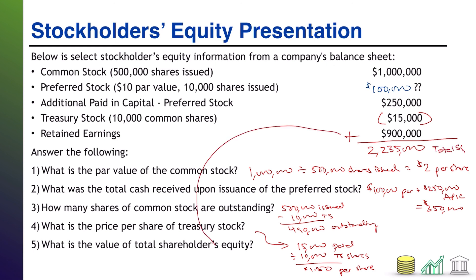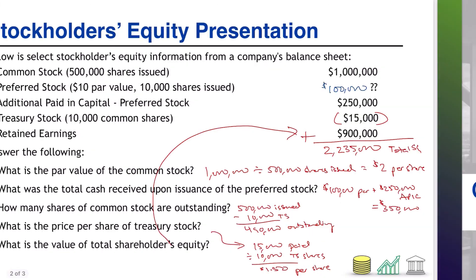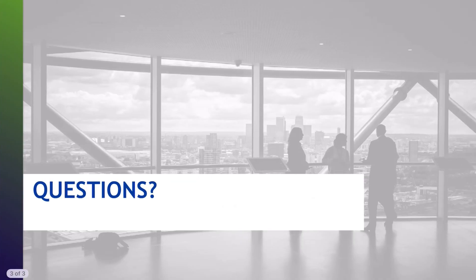And that was our answer to the final question. I hope this helped you see how all the pieces of shareholders' equity are related and how you can solve for missing items should you not have that information. I hope you found it helpful, and I hope you join me for another video.